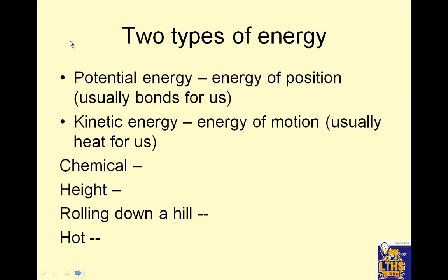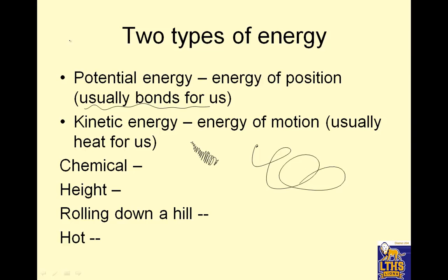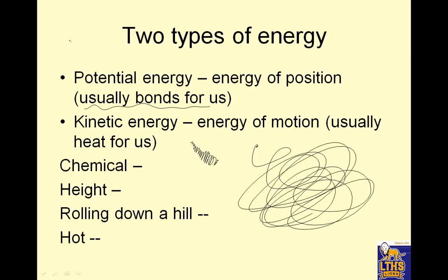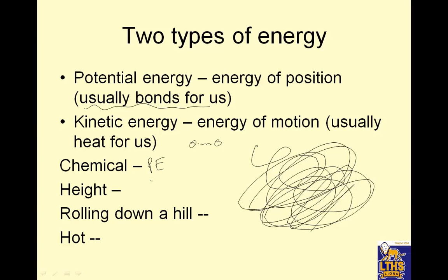There are two types of energy. Potential energy is the energy of position, which for us is usually chemical bonds. Kinetic energy is the energy of motion, which for us is usually heat. Because when something's hot, the particles are vibrating faster if they're solids, and they move faster. If they're liquids, they're rolling faster. If they're gases, they're just shooting all over the place. Chemical energy would be potential energy because the distance between two atoms determines the strength of the bond.